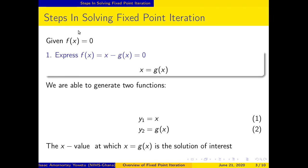Given the function f(x), we express it in terms of x minus g(x) equal to 0, and then rewrite it accordingly. Having done this, we obtain two functions, y1 and y2, where y2 is the g(x) that is of interest to us. The very point at which x and g(x) meet on the graph — when you trace it, the x value at that point is the solution of interest.